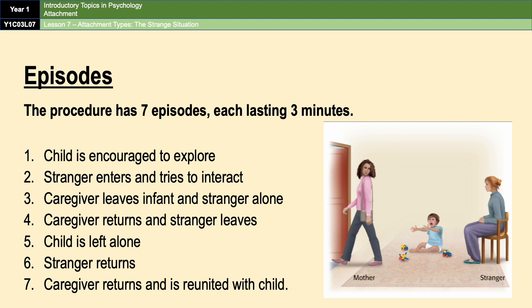For example, episode two looks at stranger anxiety because we'd expect most children to be anxious around an unknown adult, whereas episode five looks at separation anxiety because we'd expect many infants to experience distress when their caregiver leaves. Episode four looks at both reunion behavior and exploration and secure base behavior. When writing a six marker for this, you don't need to list off every single stage — it's better to give a couple of examples as part of your outline to keep a nice flow.